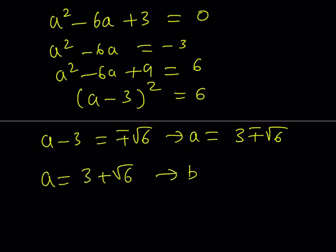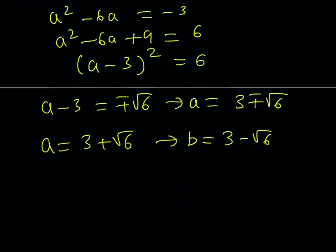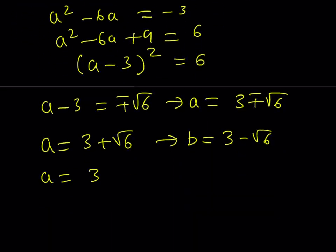Because, in other words, their sum is 6. And if a is 3 minus root 6, then b is supposed to be 3 plus root 6. So they kind of switch around.